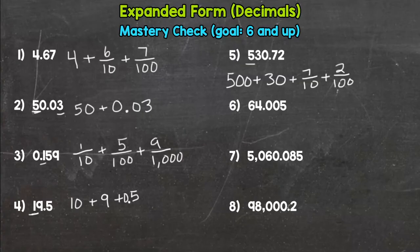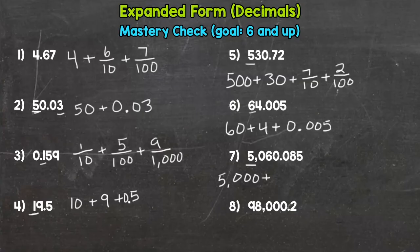Number six, we have a six worth sixty plus a four worth four plus a five worth five thousandths. Number seven, we have a five with the value of five thousand plus a six worth sixty plus an eight worth eight hundredths plus a five worth five thousandths.